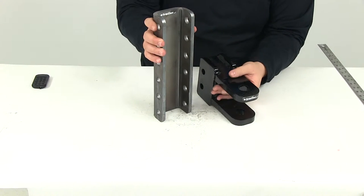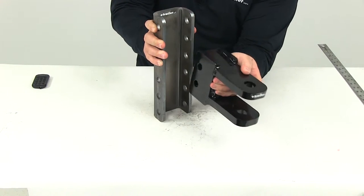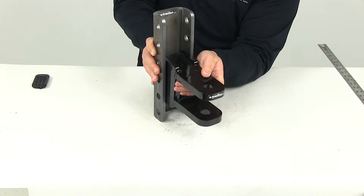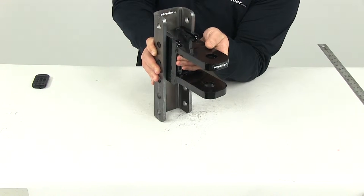So you can see here that the clevis would fit right into the adjustable channel, and then you can move it around as needed and then just line up the pin holes and secure it with the pins and clips.